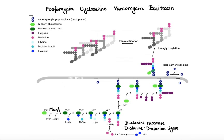Fosfomycin acts in the first cytoplasmic step of cell wall synthesis by irreversibly inhibiting MurA enzyme. This in turn prevents the formation of the peptidoglycan precursor and eventually leads to bacterial cell death.